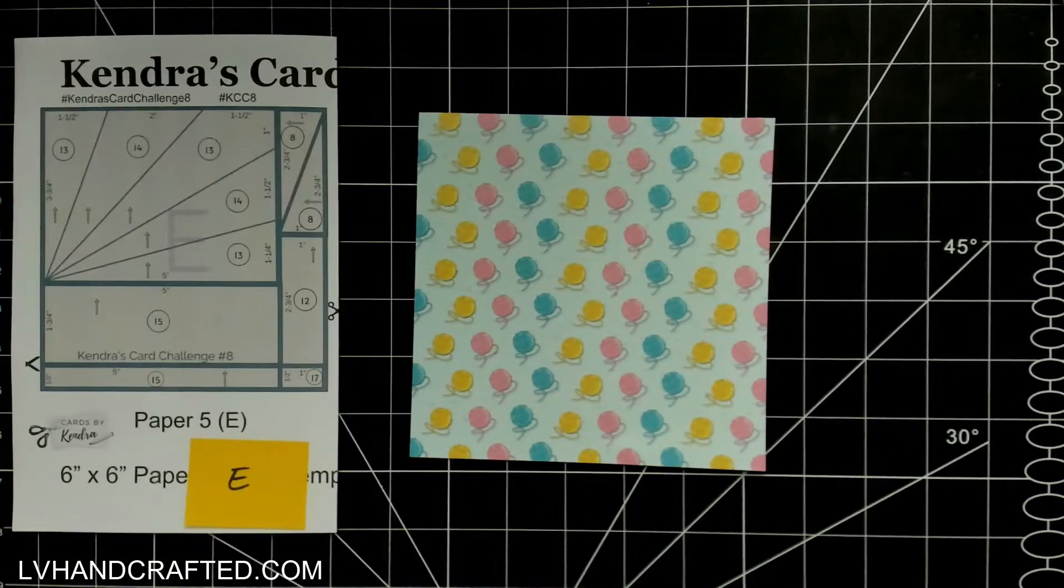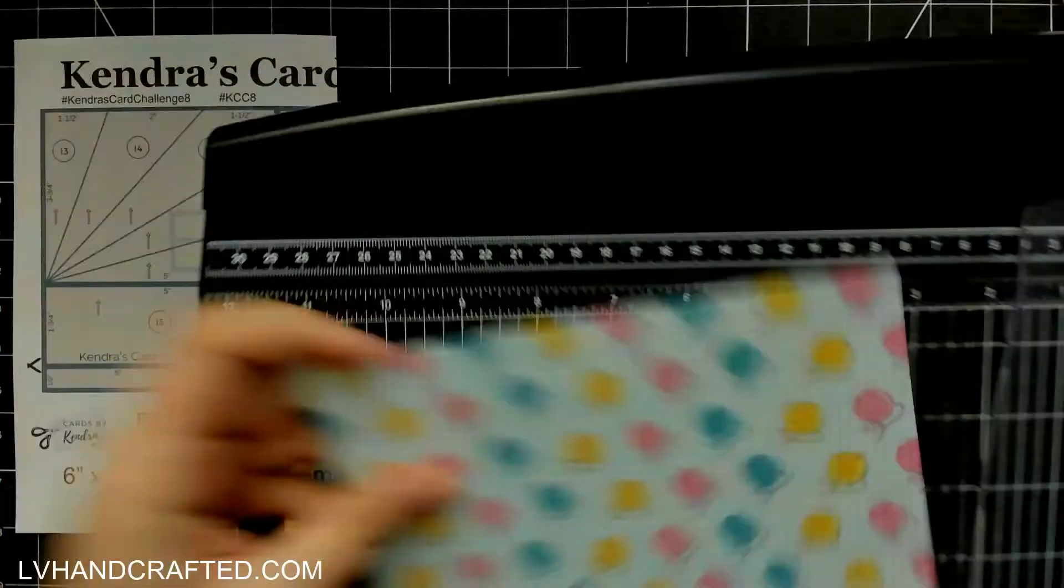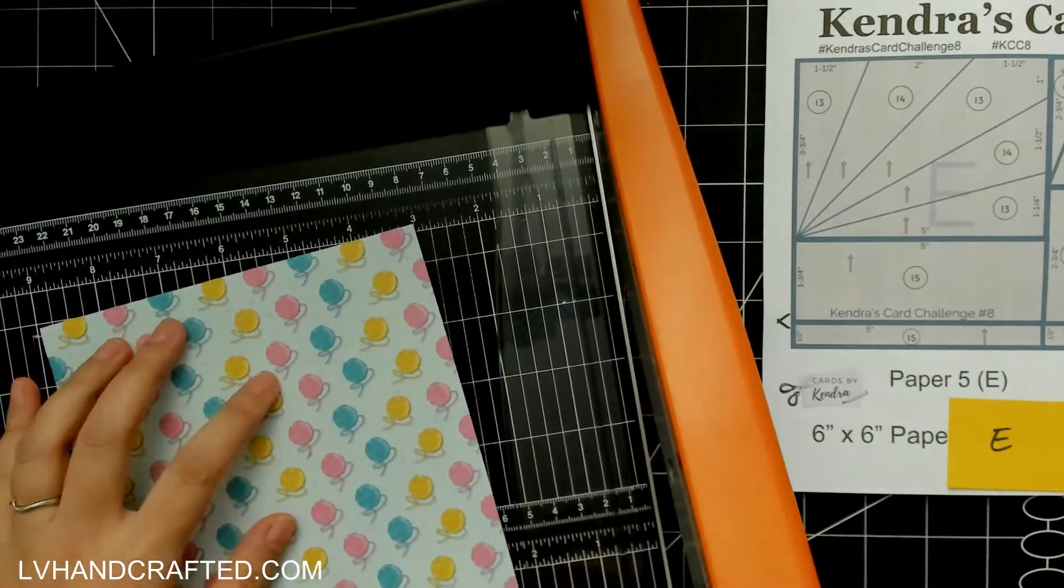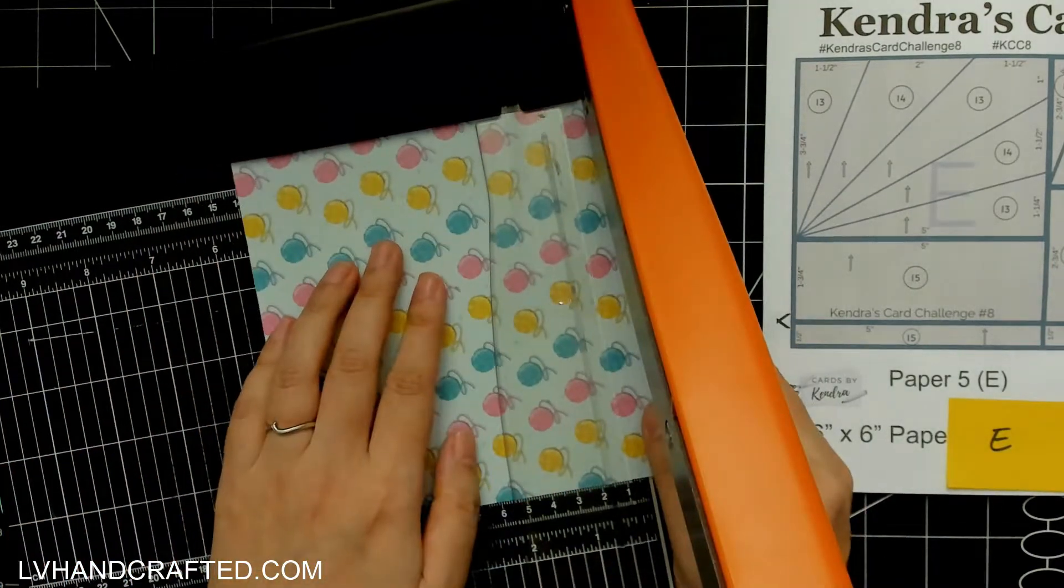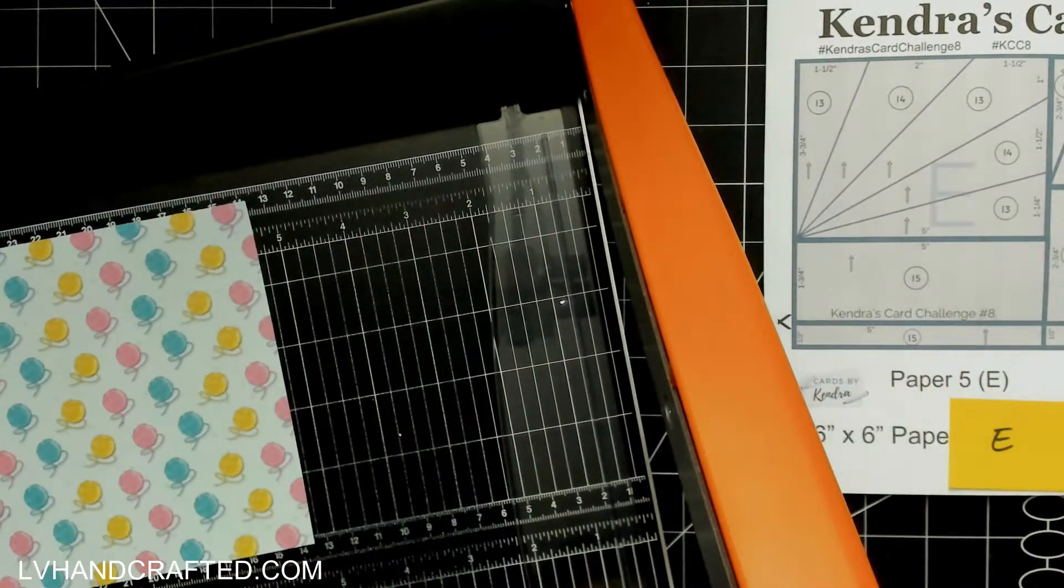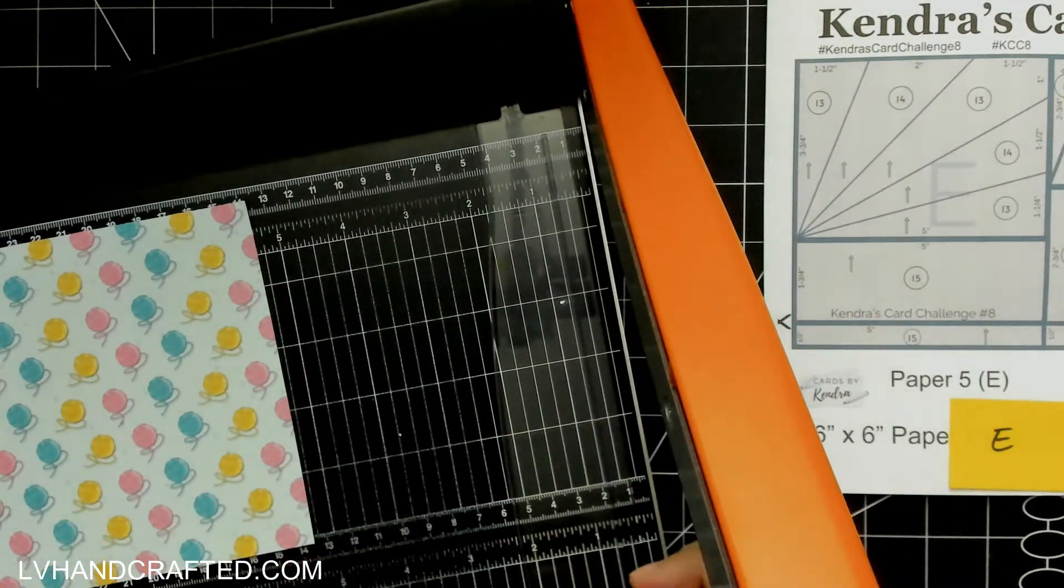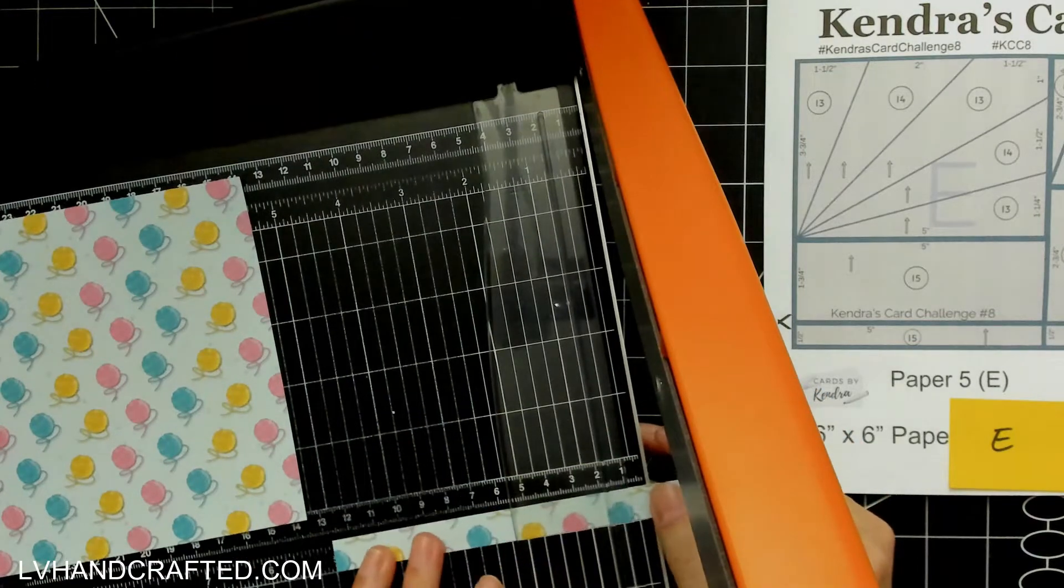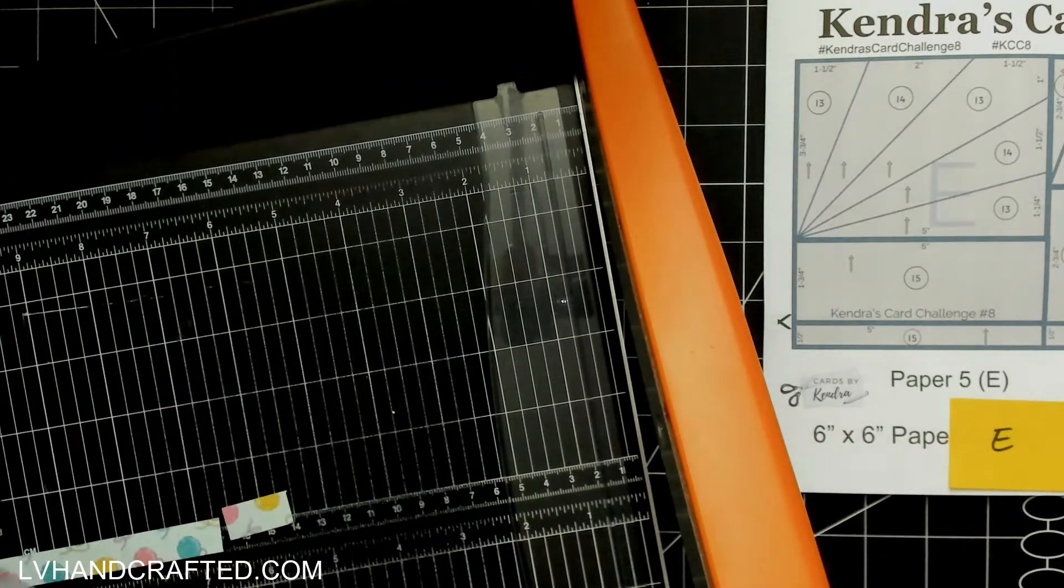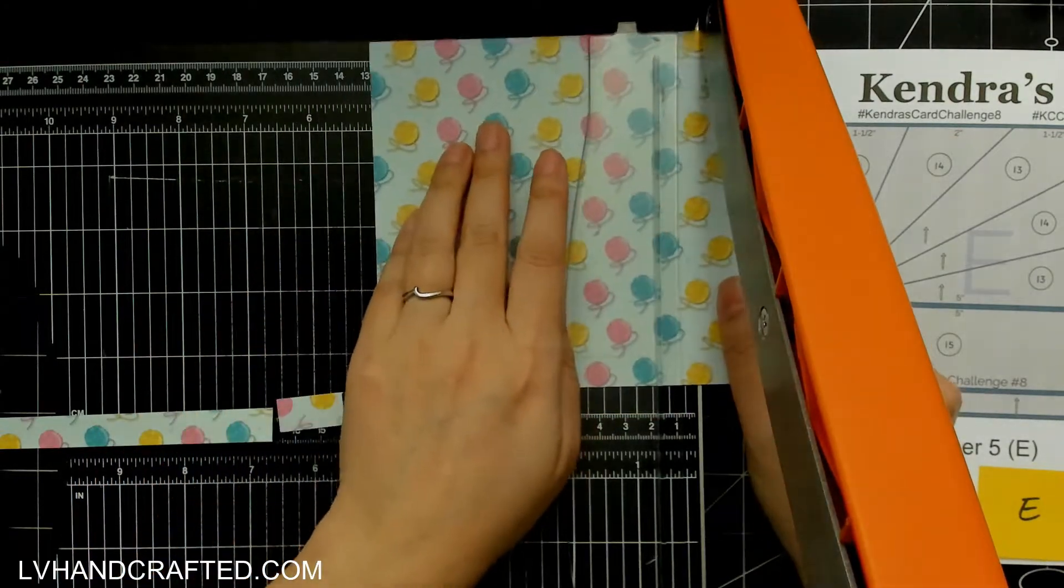Hello and welcome to my channel. My name is Lynn and today I'm playing along again with Kendra's Card Challenge number eight. This is just going to be a partial look at two of the pattern papers, specifically E and F, because between these two pattern papers there's actually four cards that only use these two papers. So I thought that might be a nice self-contained small project for a set of cards.